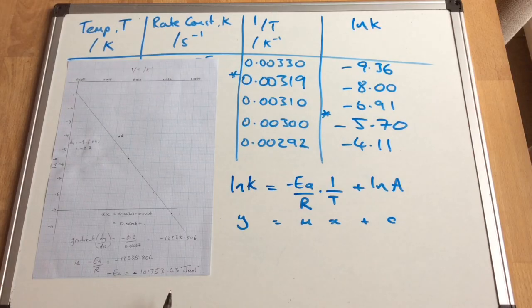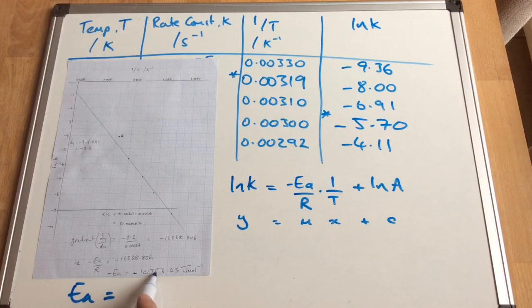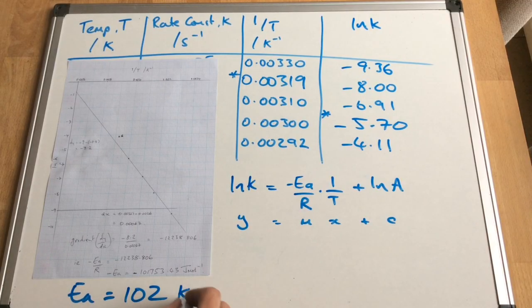So the next thing we need to do is lose these minus signs and just get rid of them because we've got one on either side. So the activation energy, Ea, is coming out at 101.753 kilojoules per mole. So let's go three significant figures. 102 kilojoules per mole.